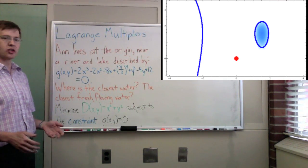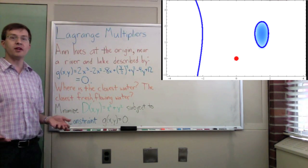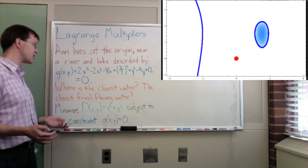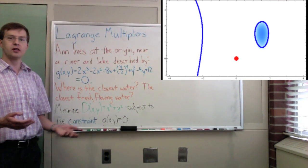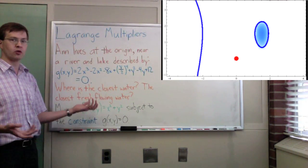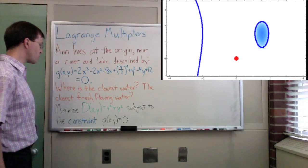And so we might ask, what's the closest water? Or maybe we want to be even more specific and say, what's the closest fresh flowing water from the river? So first one, river or lake, your call. Second one, more specific. Well, how do we answer those questions?